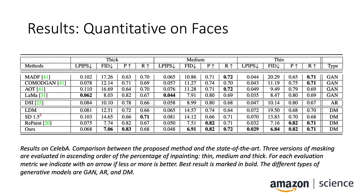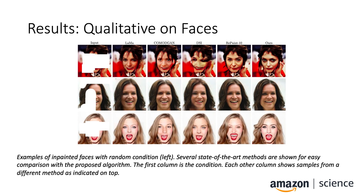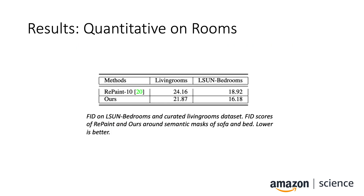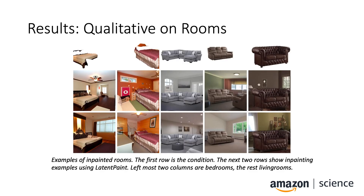We compute quantitative results over several domains. You can see in bold the best results across a set of metrics and different masking strategies against state-of-the-art inpainting models on faces. We show a comparison of inpainted faces by Latent Paint and other methods. Notice the overall condition-inference consistency of the proposed method in the rightmost column. We do not limit ourselves to faces — Latent Paint clearly outperforms post-conditioned models on bedrooms and living rooms, far more difficult domains than faces, and we illustrate this with examples produced by Latent Paint.